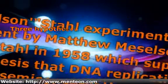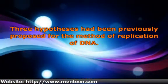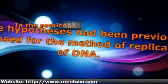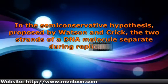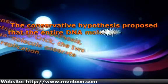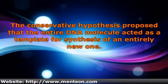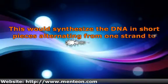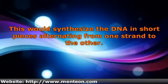Three hypotheses had been previously proposed for the method of replication of DNA. In the semi-conservative hypothesis, proposed by Watson and Crick, the two strands of a DNA molecule separate during replication. The conservative hypothesis proposed that the entire DNA molecule acted as a template for synthesis of an entirely new one. The dispersive hypothesis proposed that DNA would be synthesized in short pieces alternating from one strand to the other.